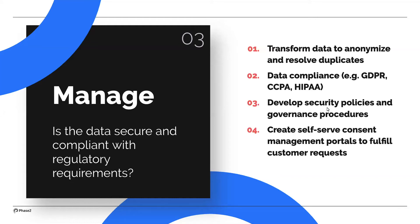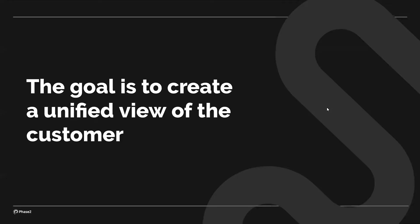So we've defined our customer data need, we've made sure our MarTech stack is collecting it, and we have systems and policies in place to manage it. The goal is to create a unified view of the customer so we can better understand them — you might have also heard this as a single source of truth or a 360-degree view of the customer. The goal is the same: just know more about our audiences, gain insights into their behaviors and habits so we can serve them better. But how do we know if we are helping our audiences? This is where the next part of the approach comes in.